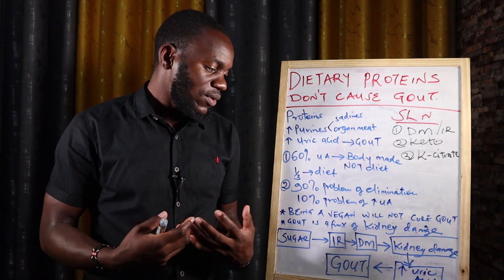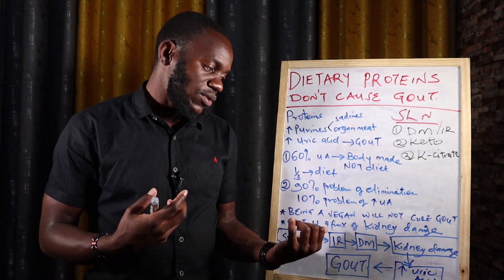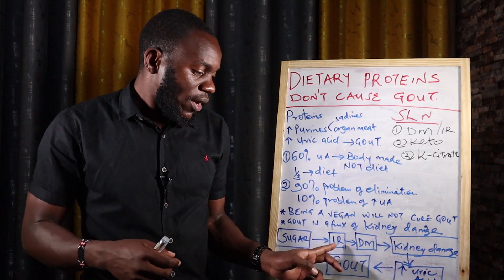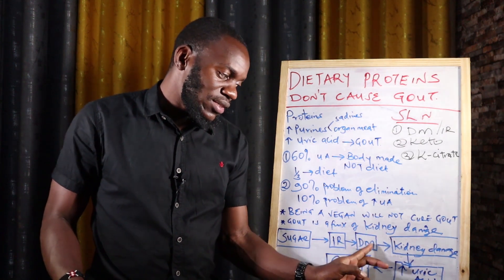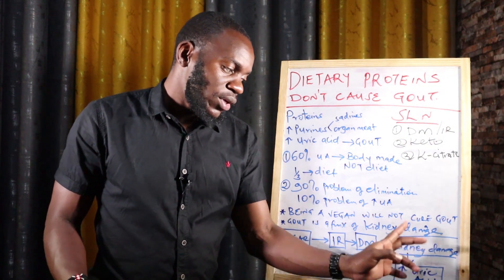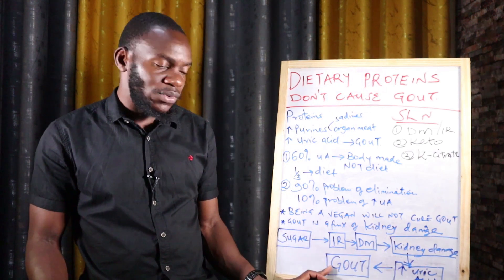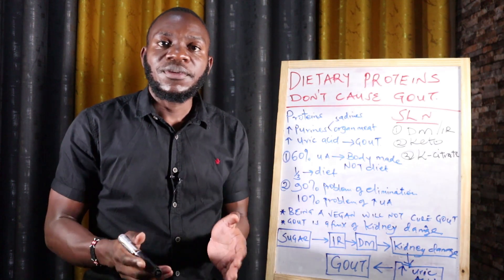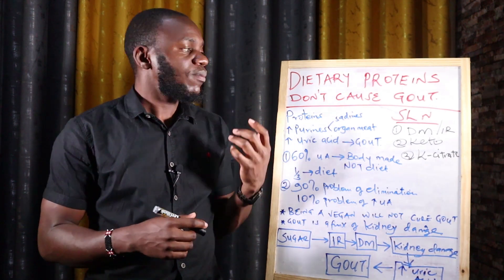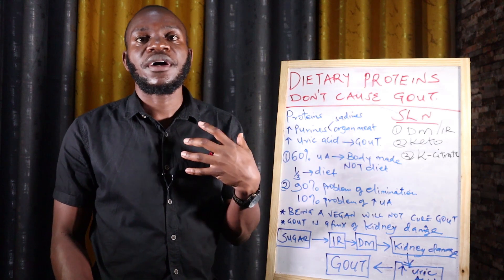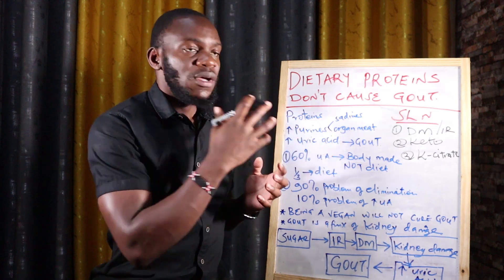Once blood supply to the kidneys is destroyed, the kidney tissue starts to undergo necrosis — it is denied oxygen and nutrients. Insulin resistance leads to diabetes mellitus, diabetes leads to kidney damage, kidney damage causes uric acid to accumulate because you cannot eliminate it, and that uric acid causes gout. So our major problem is sugar, not protein.